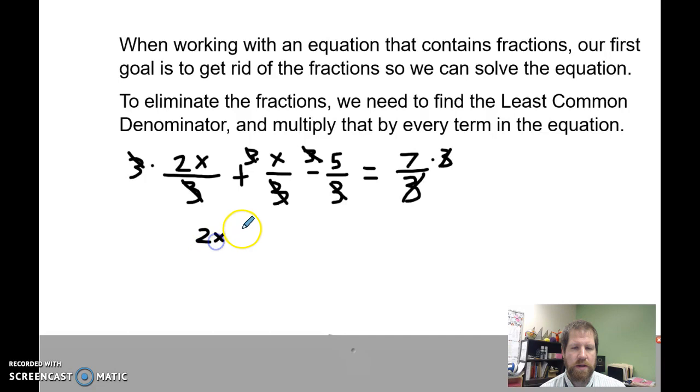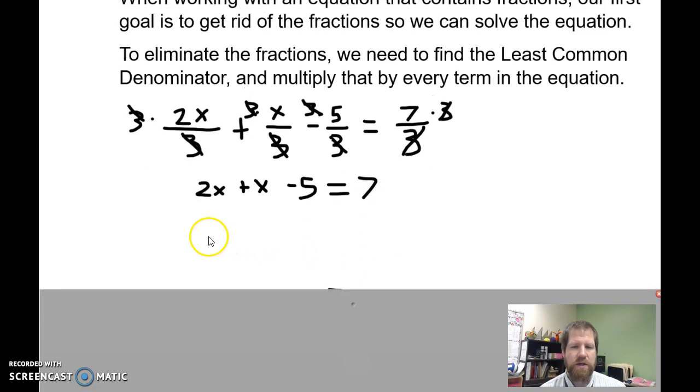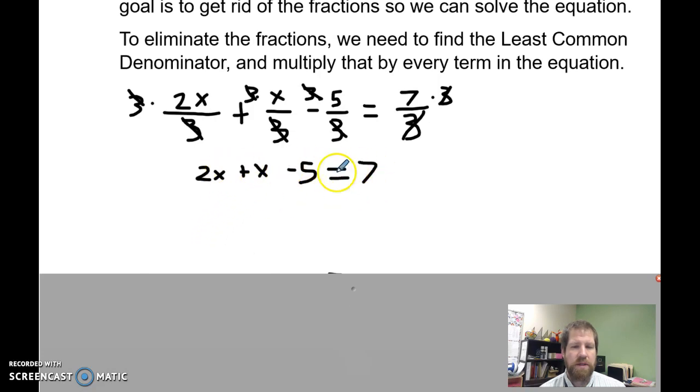So I'd be left with 2x plus x minus 5 equals 7. Now I can go back to my normal steps, combine my like terms. 2x plus x is 3x. I have a negative 5 here, but I want to isolate my variable. So I'm going to add 5 to both sides. I'll be left with 3x is equal to 7 plus 5, or 12, divide by 3. And I'm left with x is equal to 12 divided by 3, or 4.